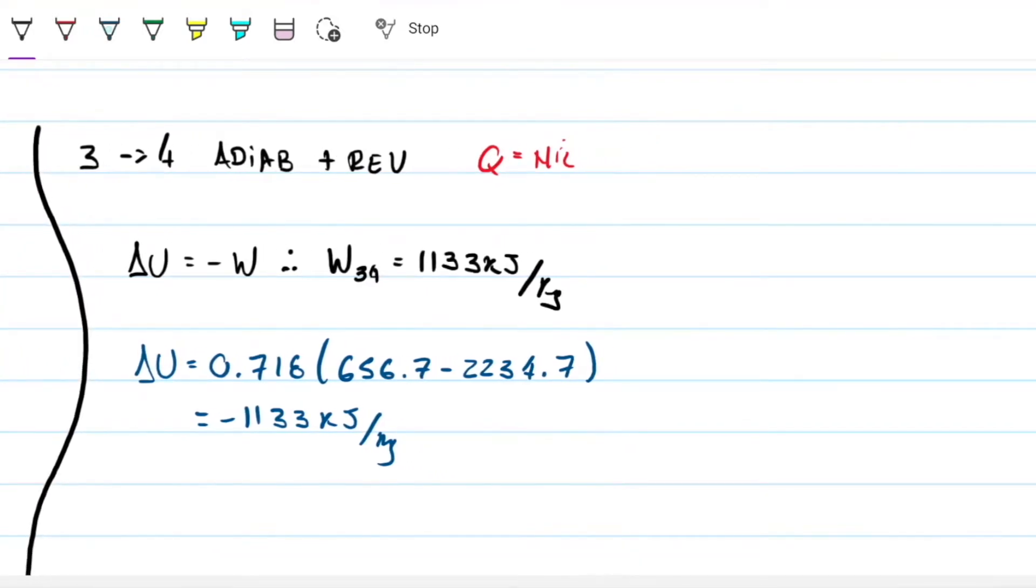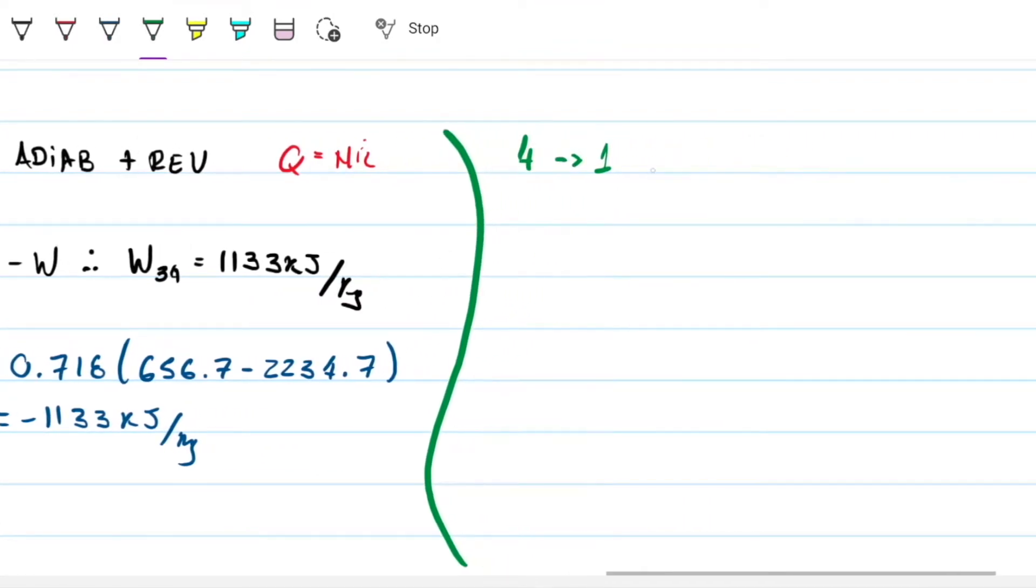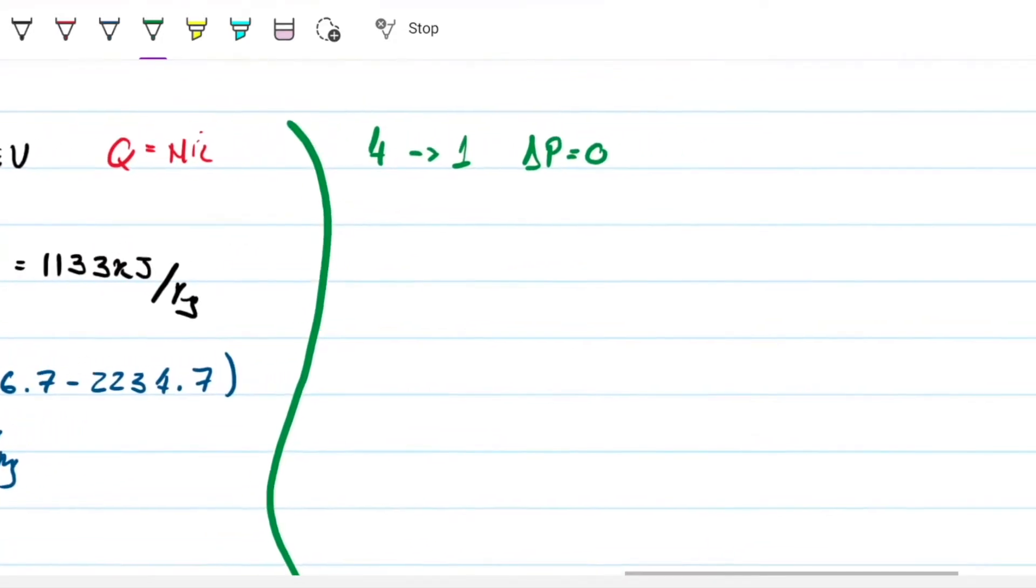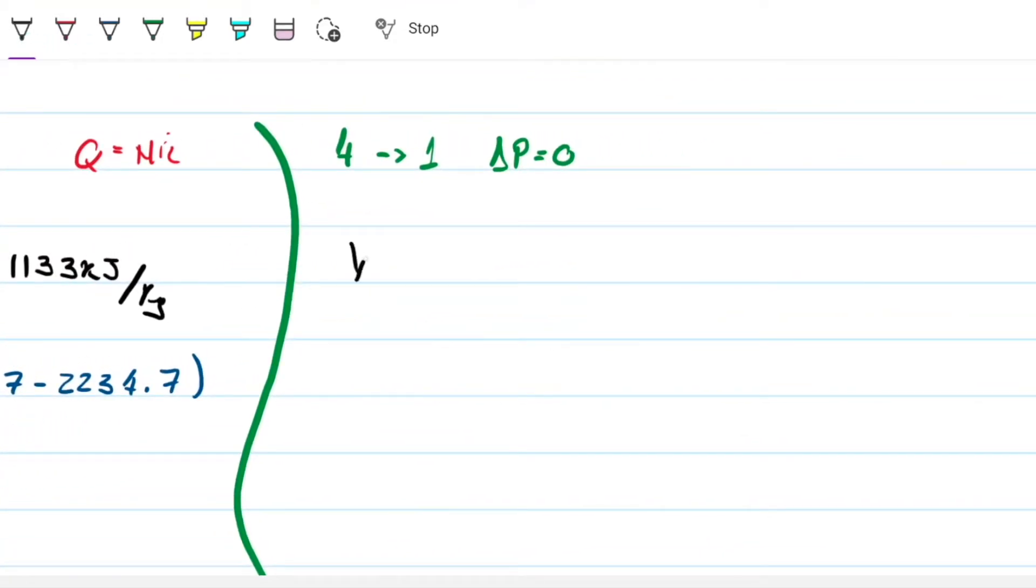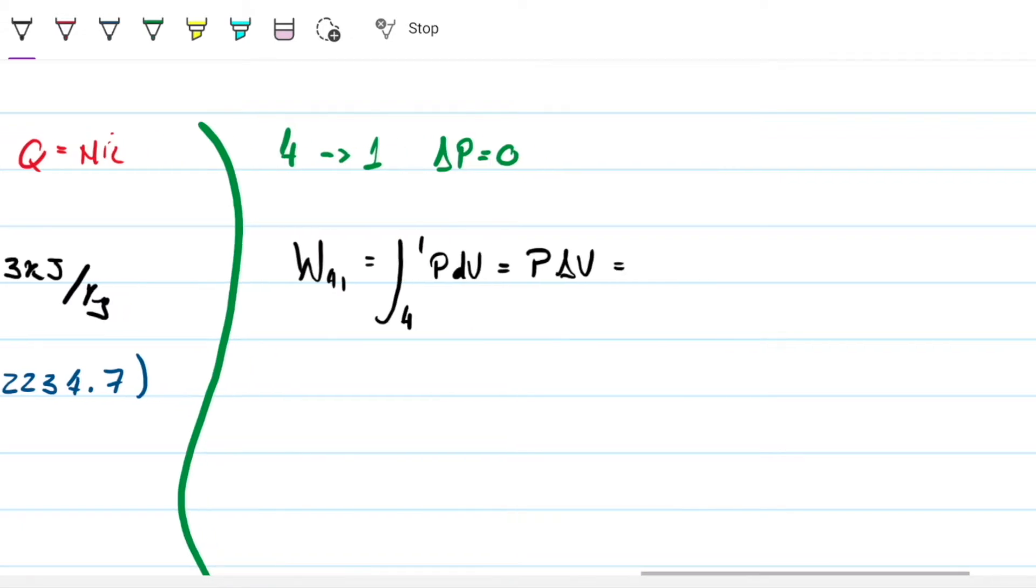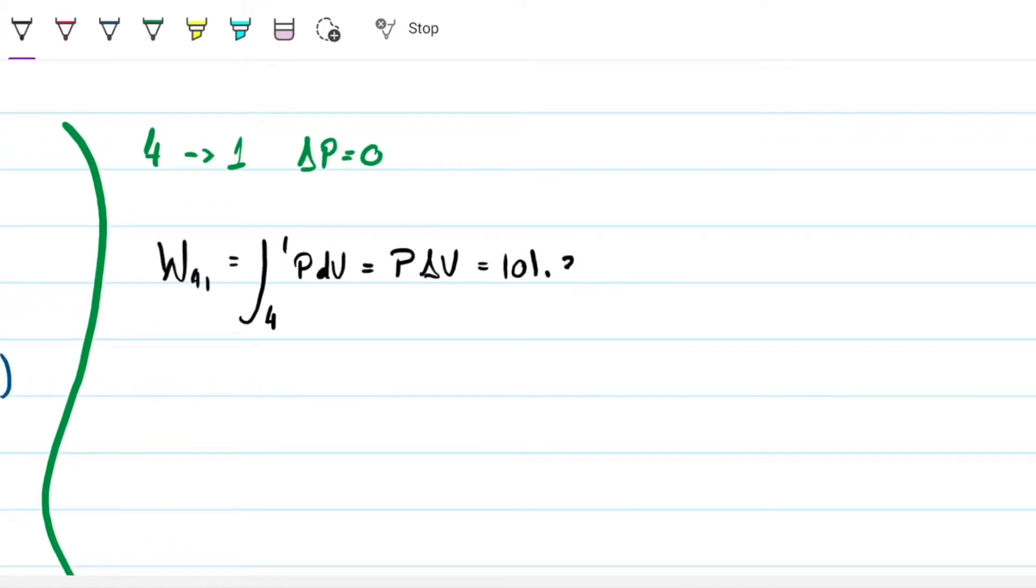And then the last step of the way is from 4 to 1. Now, notice this is an isobaric, so my delta P does not change. So delta P is zero. That does not change. And that doesn't really allow us to eliminate work or heat. We're actually going to have both. What we can do, though, is that because our delta P is zero, we can calculate work from 4 to 1 quite easily because that's the integral of 4 to 1 of P dV. And because my P is constant, then that comes out of the integral, and we just have P delta V.